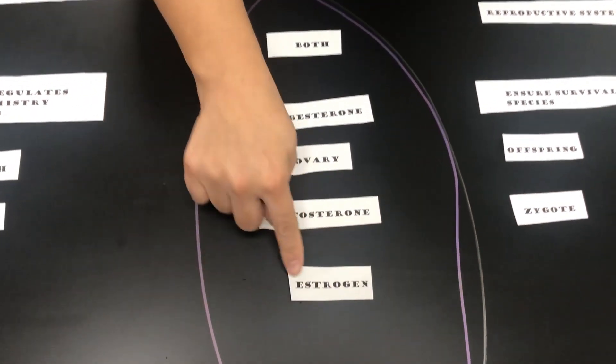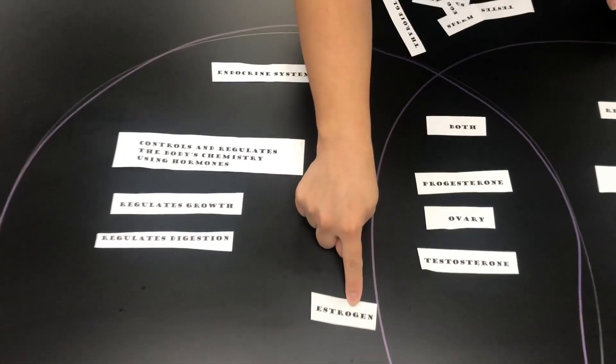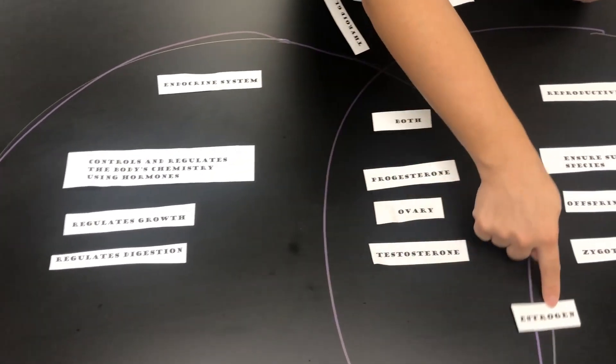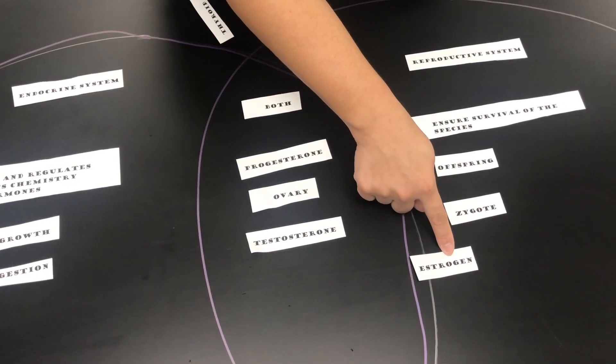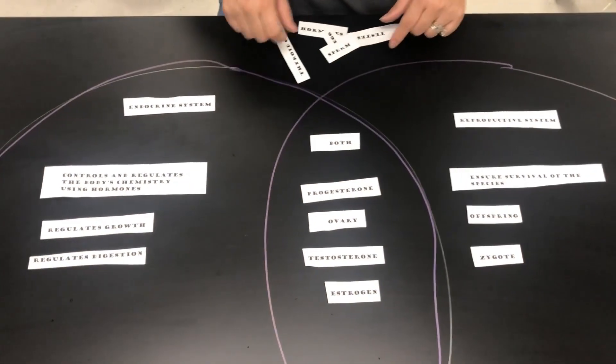Estrogen. Estrogen was also the second type of hormone that females produce, and it's part of the reproductive system as well. So estrogen goes under both, part reproductive and part endocrine.